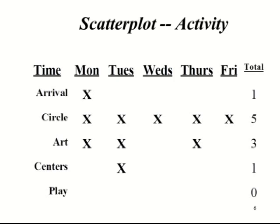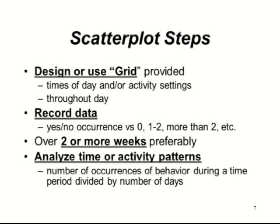You can also begin at this point to make some hypotheses about what is it about a particular activity. Is it the fact that you've got a lot of kids sitting in close proximity? Is it the nature of the demands? Or sometimes a student has to wait while other kids take turns — it could be any of those factors that you would want to look at more closely. To make a scatter plot, you first make a grid, decide how to divide up the day — half-hour increments or based on the student's schedule — and record whether the behavior happens within each interval.